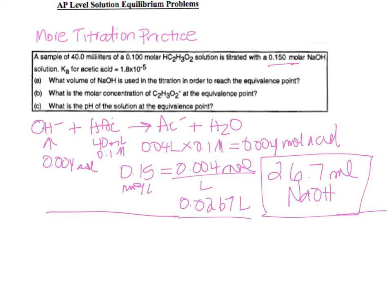It says, what is the molar concentration of the acetate at the equivalence point? So just like an invader problem, I can show you here that all of these are invader problems. All titrations are, we're always adding at least one strong thing.